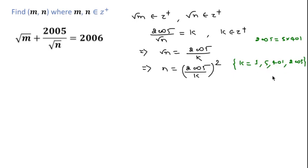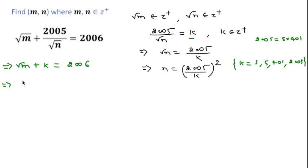We can rewrite the original equation as square root of m plus k equal to 2006, which means square root of m equal to 2006 minus k. Now we substitute each value of k.